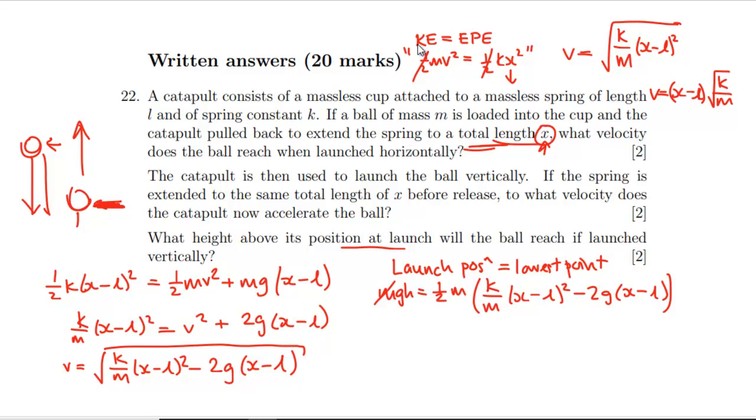The m's cancel. We can put these 2s all the way through, get rid of that and put 2 down there. We've got g's, so let's get g all the way through. We're left with h equals k/(2mg)(x-l)² minus (x-l). That would be the height above the lowest point.